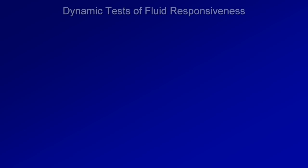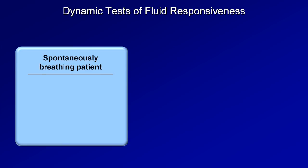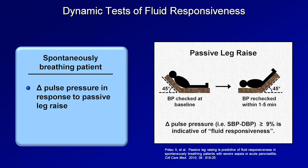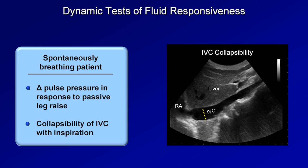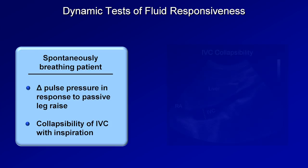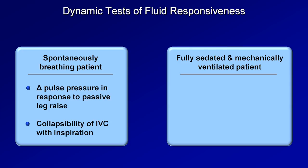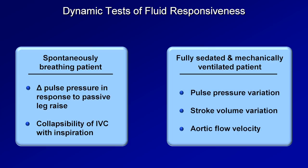I mentioned that tests of fluid responsiveness are dynamic. The appropriate tests depend upon whether the patient is spontaneously breathing or is being mechanically ventilated. In the spontaneously breathing patient, we can look at the change in pulse pressure in response to passive leg raise, as explained in the video on recognizing shock subtype. We can also look at whether or not the IVC collapses with inspiration as seen on bedside ultrasound. In patients who are sedated and mechanically ventilated, some even more accurate tests become options, the most common being pulse pressure variation, stroke volume variation, and changes in aortic flow velocity.